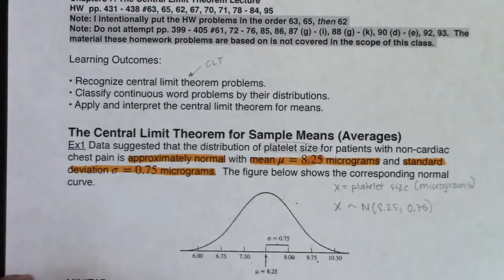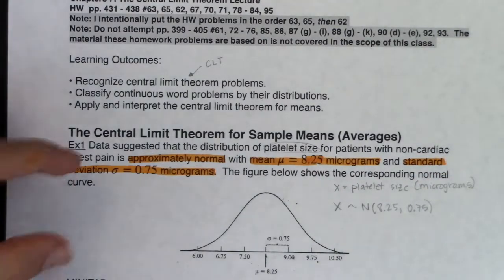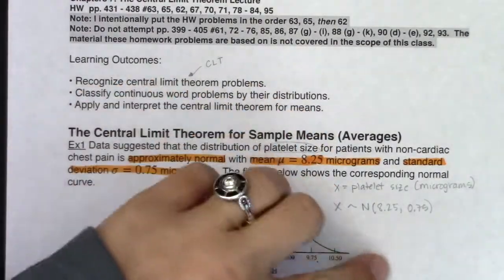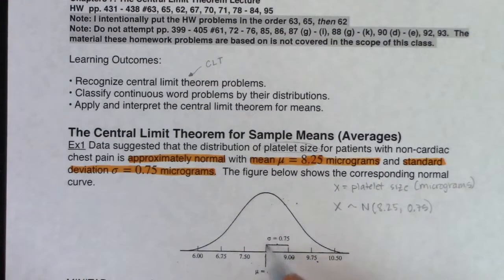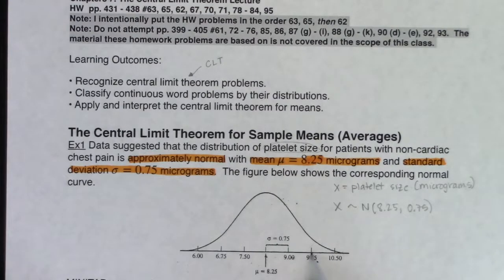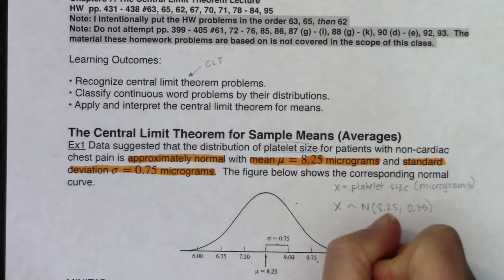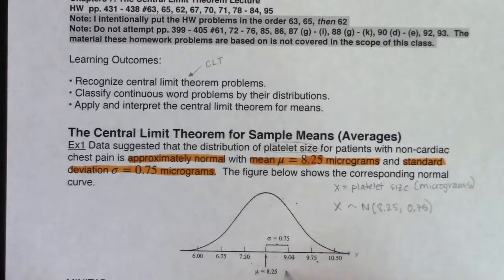They gave us enough information to say the population was normally distributed with a mean of 8.25 and a standard deviation of 0.75. Right now, this is a Chapter 6 setup — we're talking about all the patients. Here's the population distribution. The center, 8.25, falls under that peak, and you can see them scaling the x-axis: one standard deviation above, two, three, and then one, two, and three below. If I was going to label this properly, the x-axis would be platelet size in micrograms.